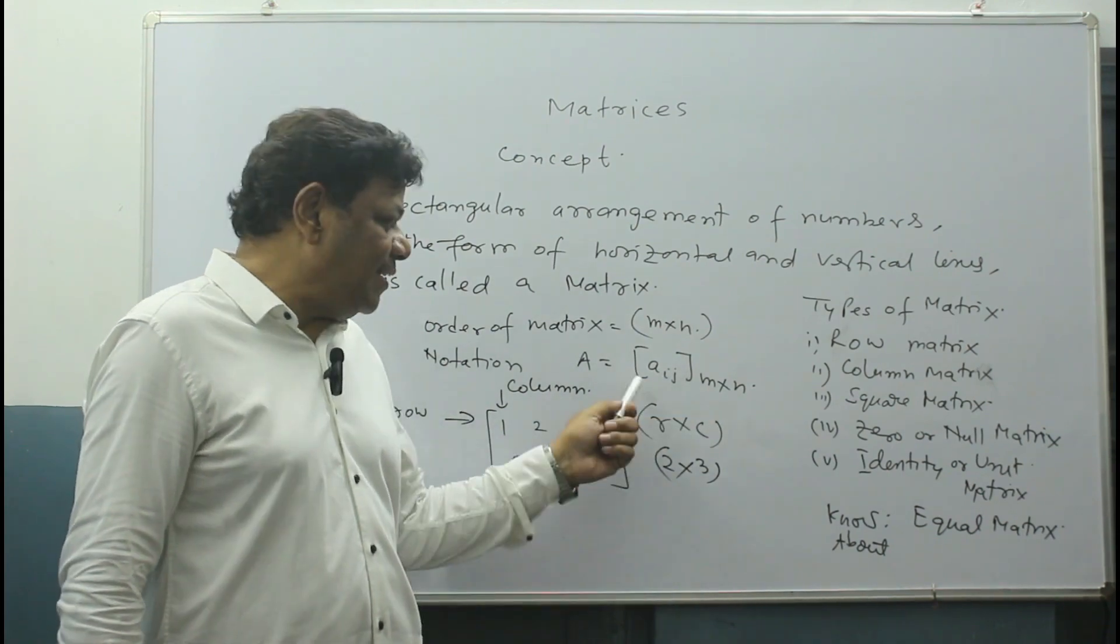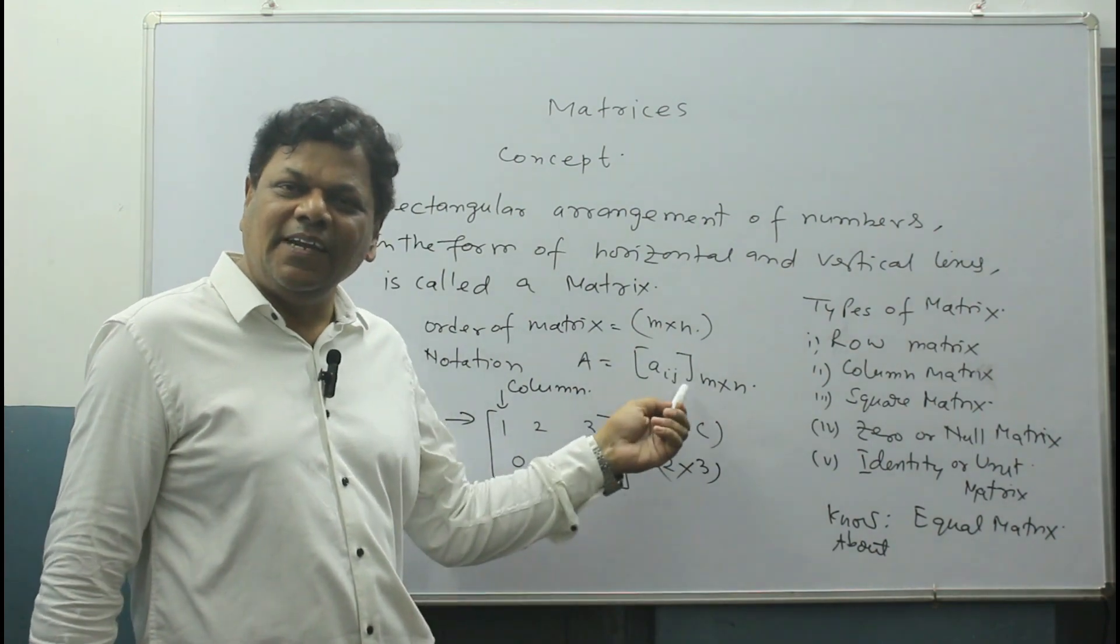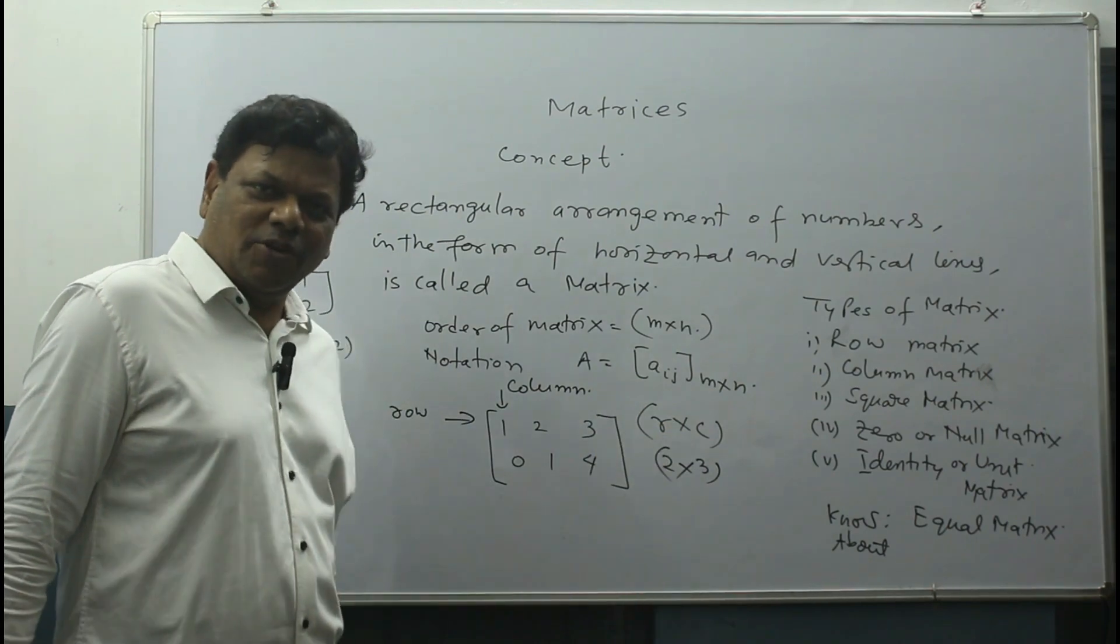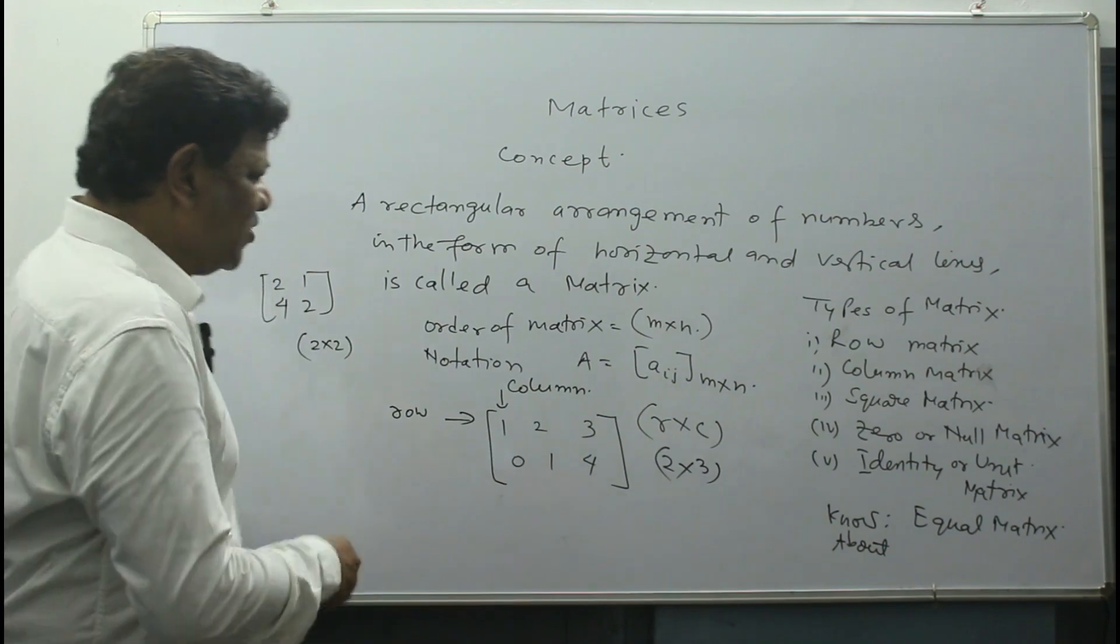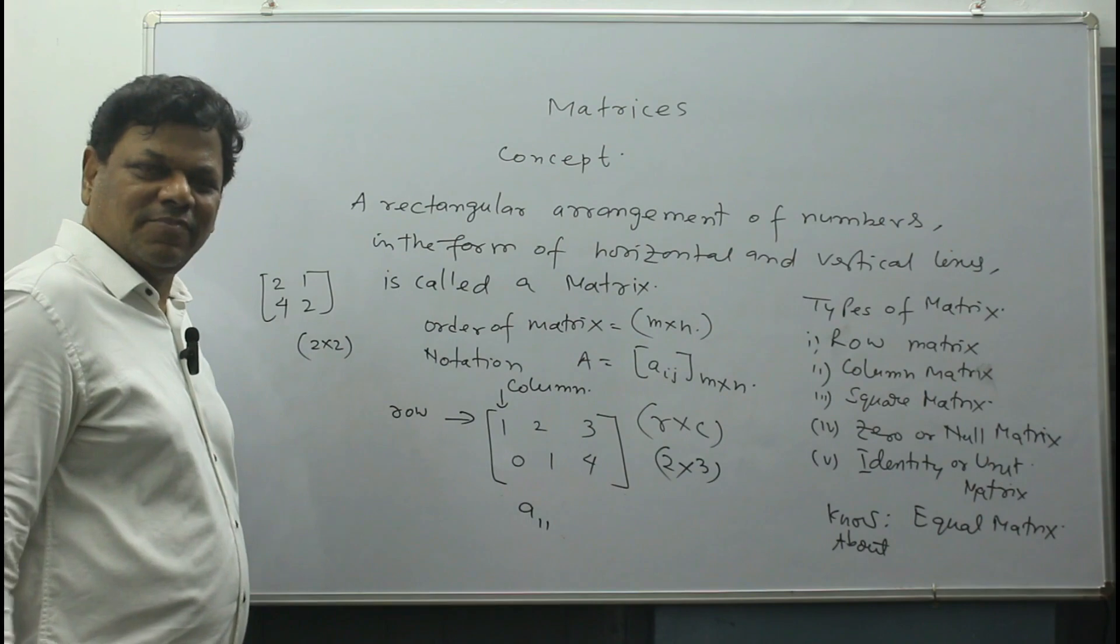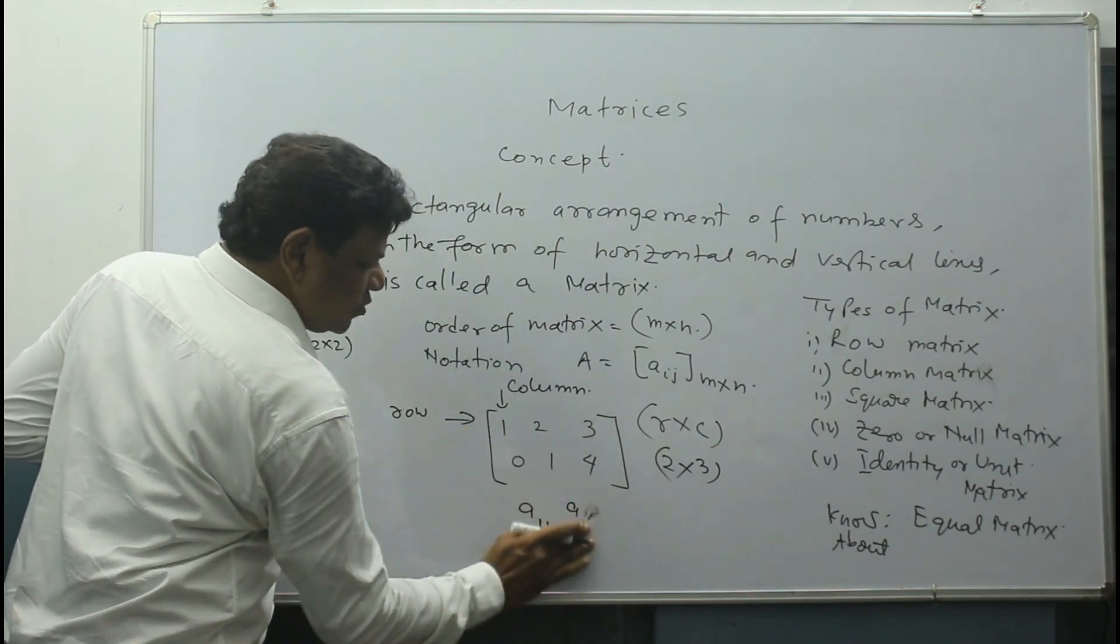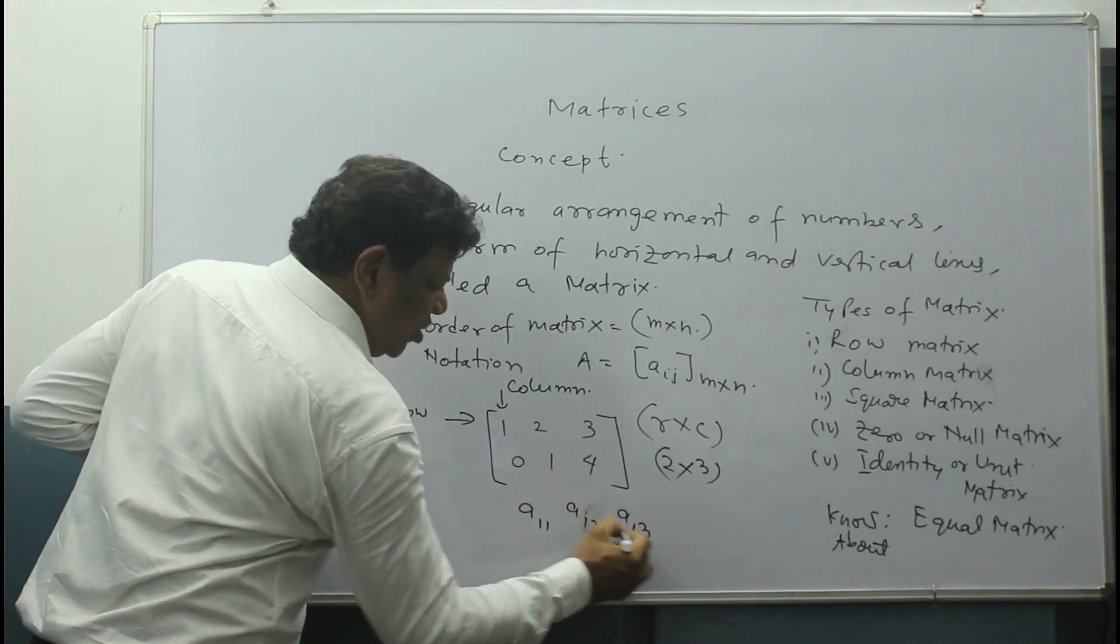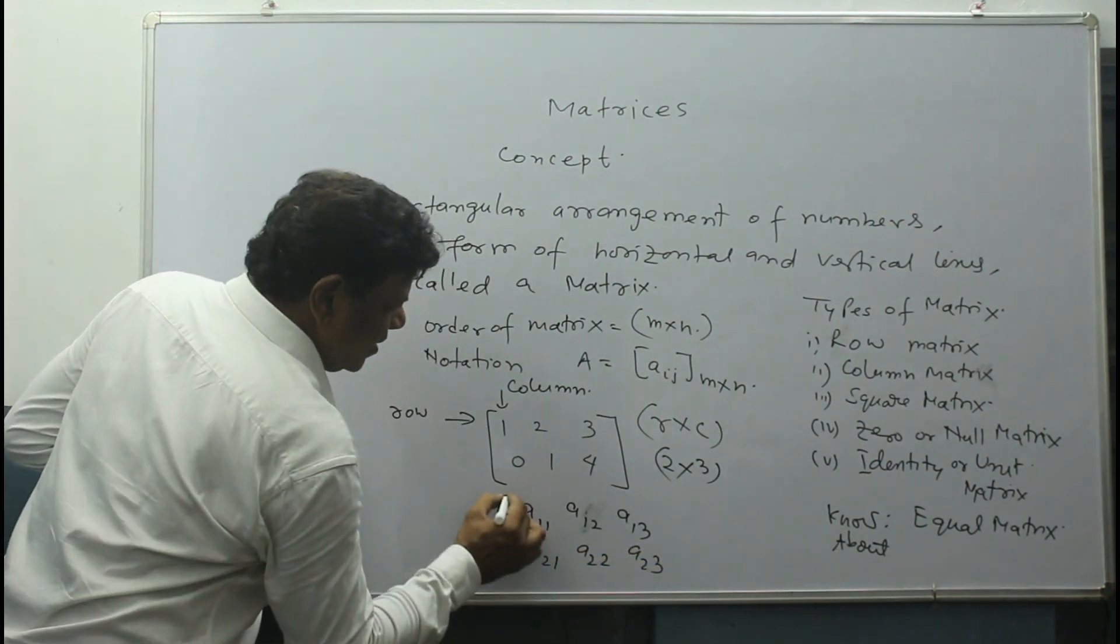Now what is IJ? IJ represents row and column. This is what I call R and C, okay. So now this is first row and first column. So what is IJ? This one I can say like this: A₁₁, row 1 column 1. What is this? Row 1 column 2. So I can say A₁₂, A₁₃, A₂₁, A₂₂, A₂₃.